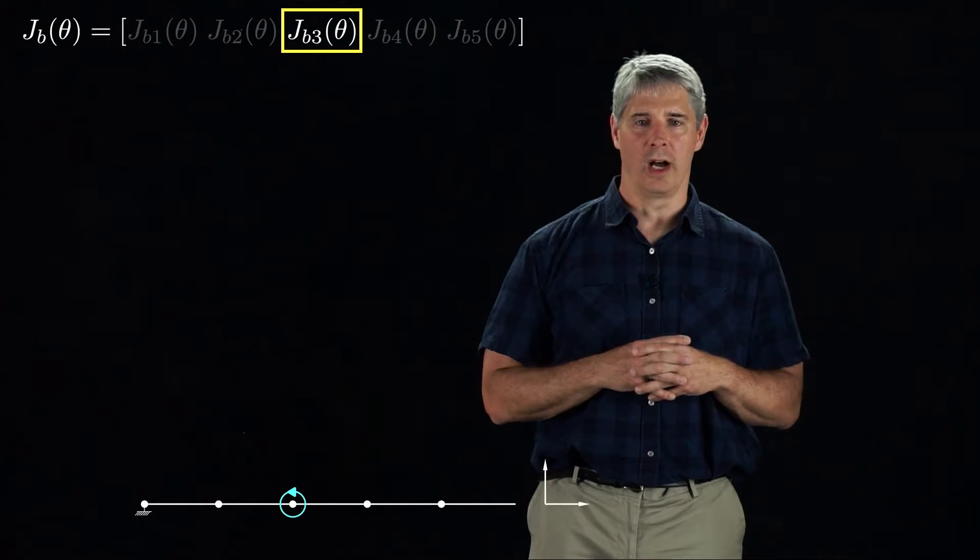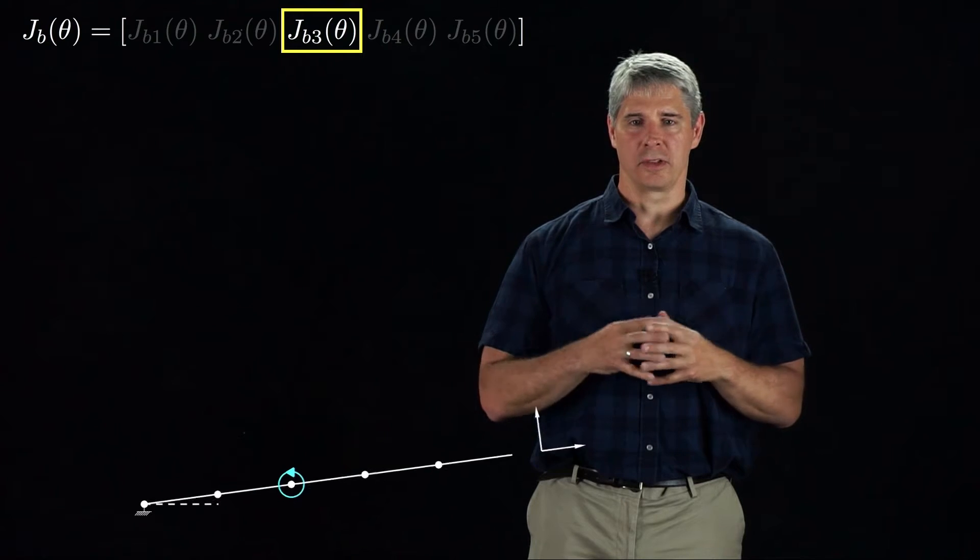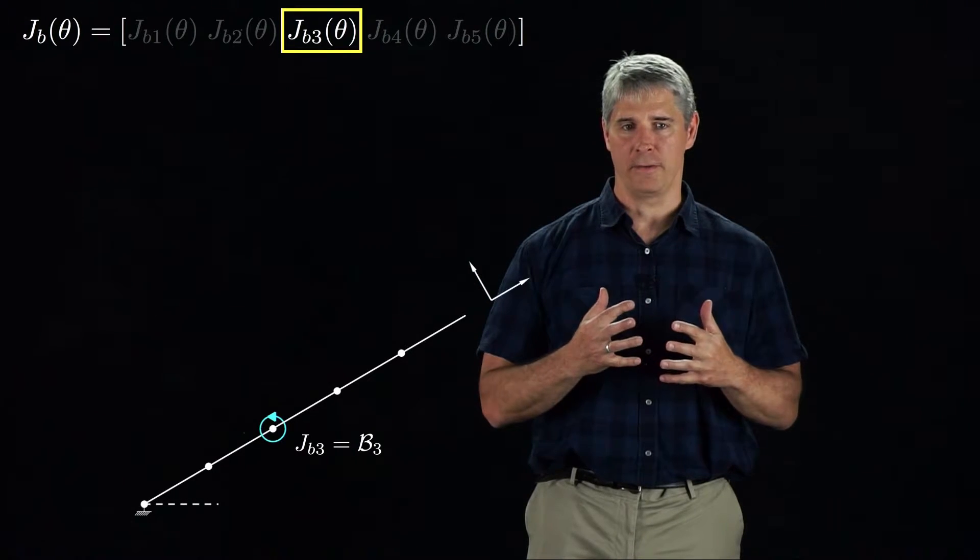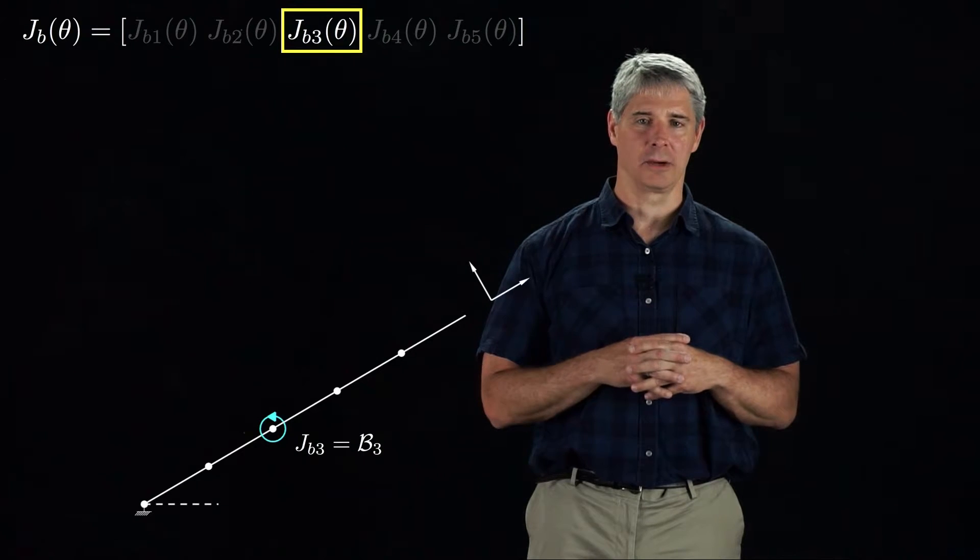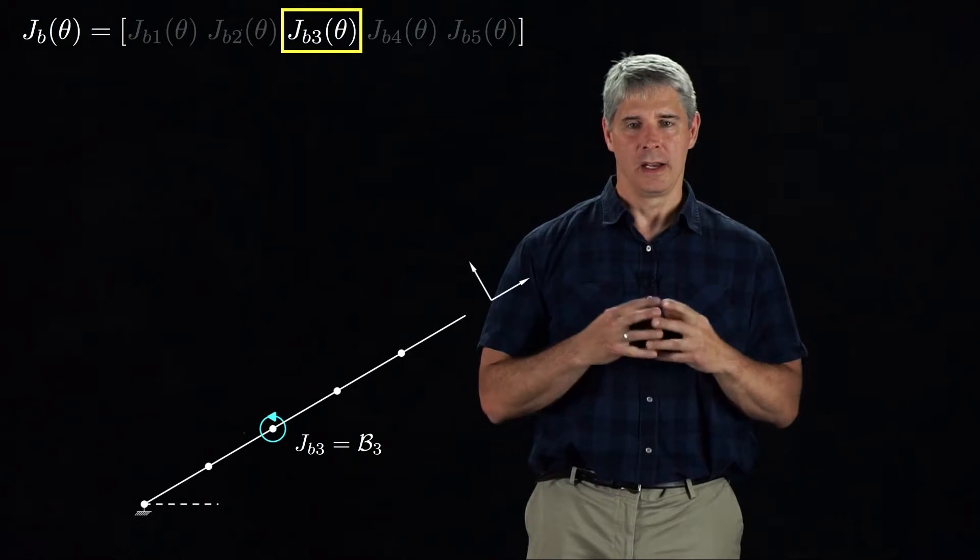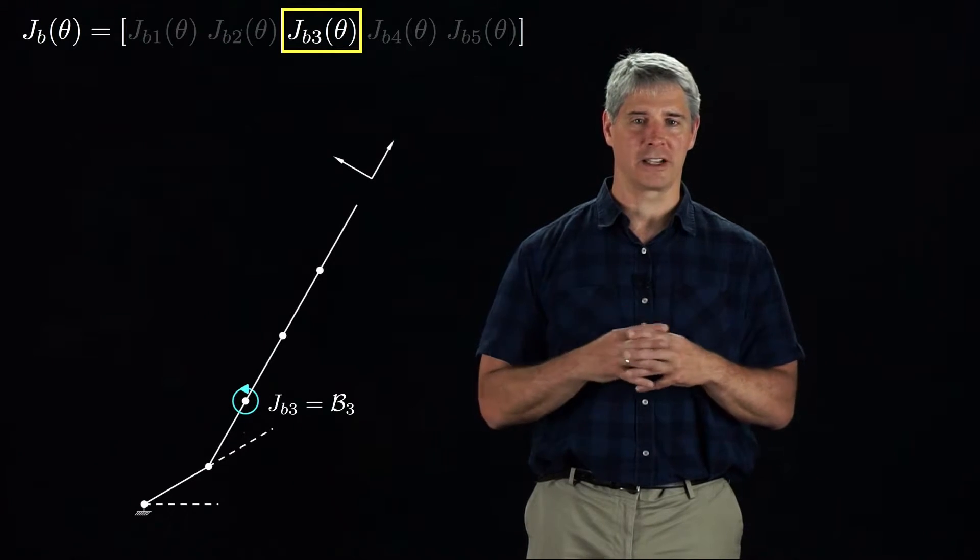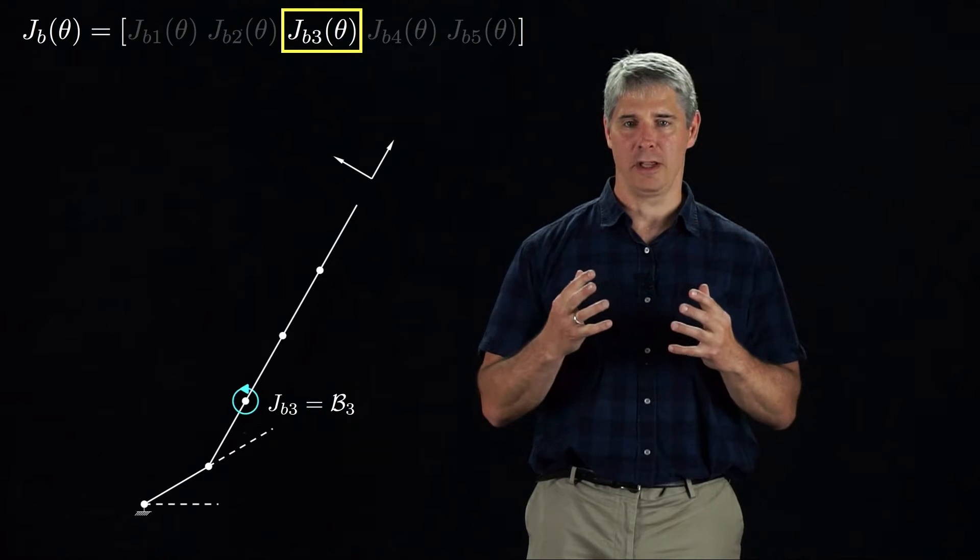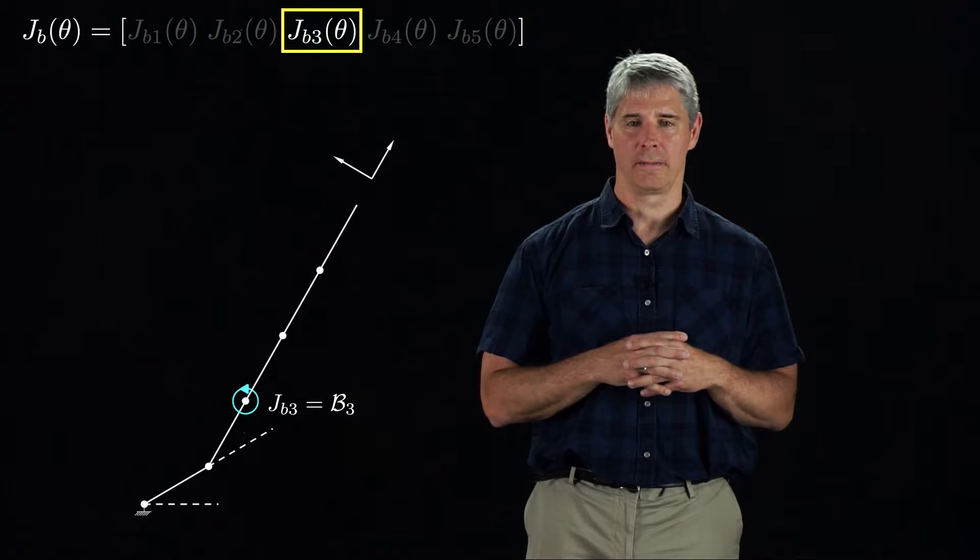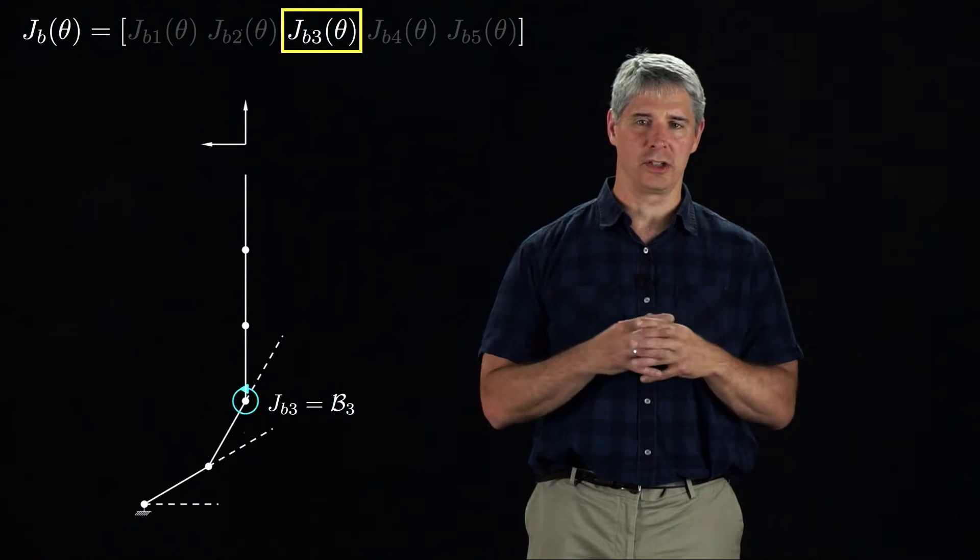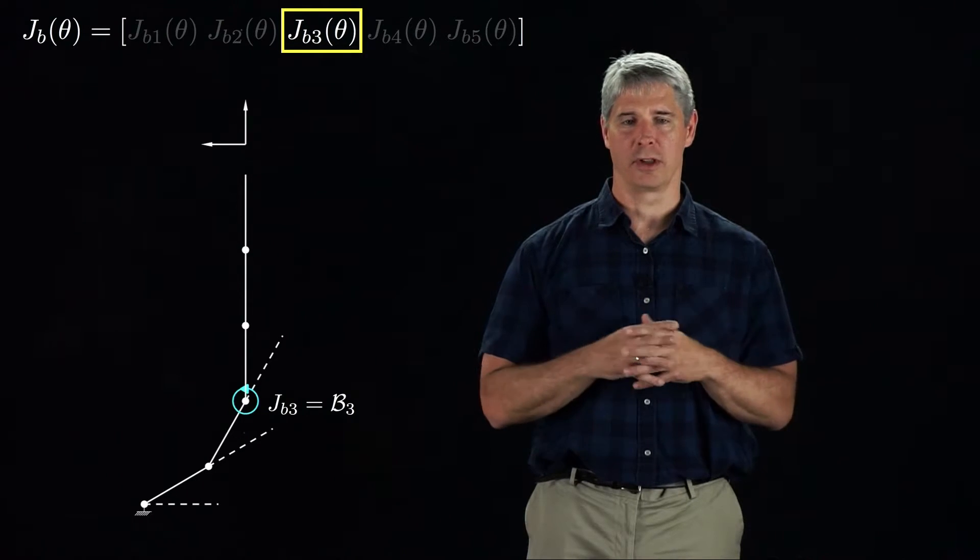Now we rotate joint 1. Notice that this rotation of joint 1 does not change the relationship between joint 3 and the B frame, so Jb3 is still equal to B3. Now we rotate joint 2. Again, the relationship between joint 3 and the B frame is unaffected by joint 2's motion, so Jb3 is still equal to B3. Now we rotate joint 3. As with joints 1 and 2, Jb3 is unaffected by joint 3's motion.